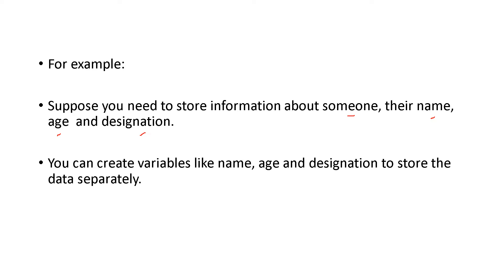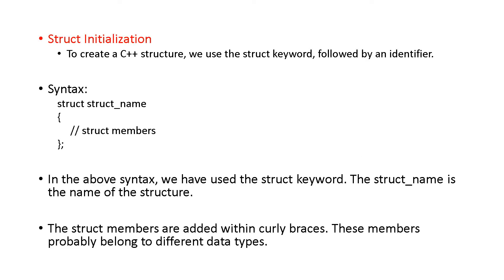To define a structure, you use the struct keyword, then give the name of the structure, open the curly bracket, write the elements which are to be included within this, and then close the curly bracket and put a semicolon. This is the way to define a structure — struct keyword, structure name, brackets, and within the curly brackets you include the different data type elements.